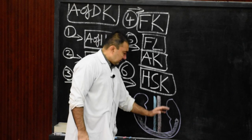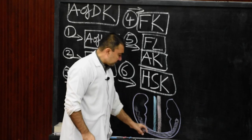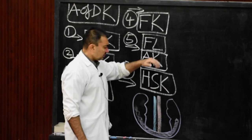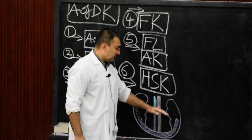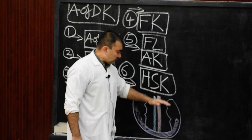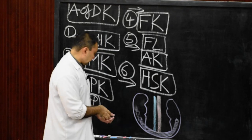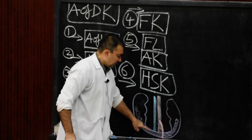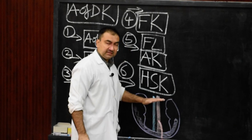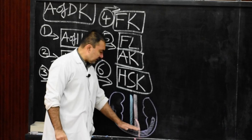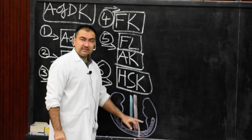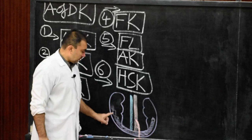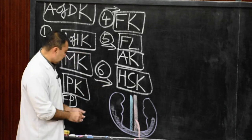This horseshoe-shaped kidney, where the lower poles of both kidneys are fused across the median line in front of the aorta and vena cava, will remain at a lower plane and will not ascend to its normal position. The ascent is arrested because of the inferior mesenteric artery, which passes in front of this abnormal lower connection. So the inferior mesenteric artery arrests the ascent of such kidneys.